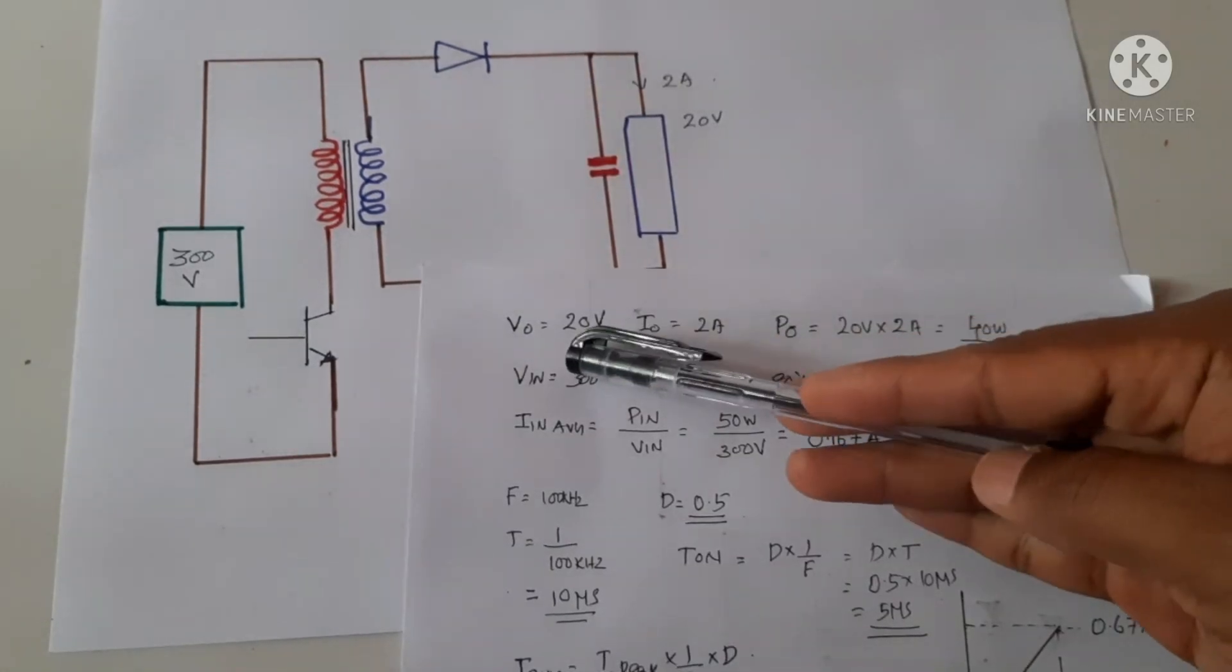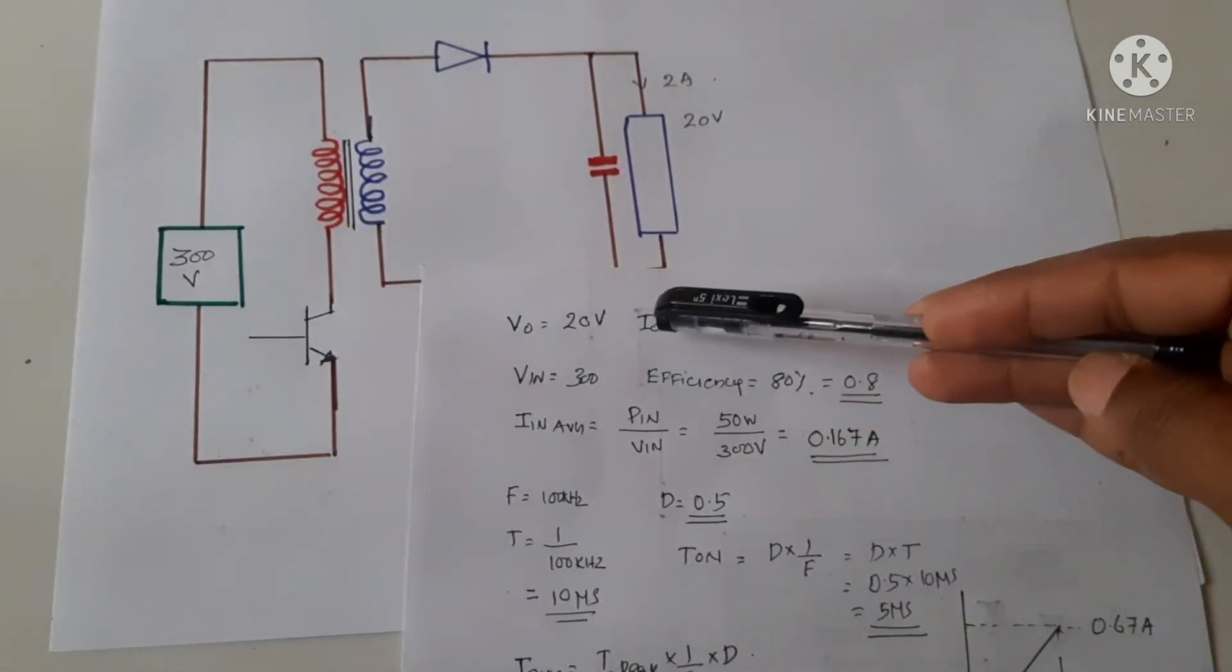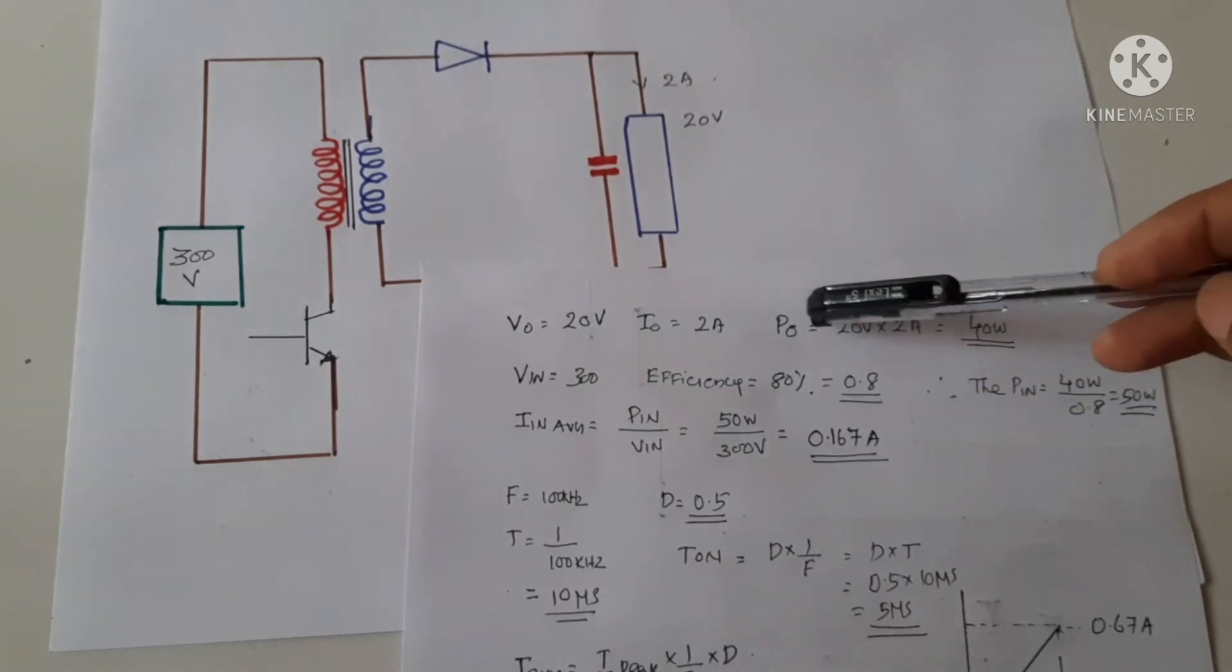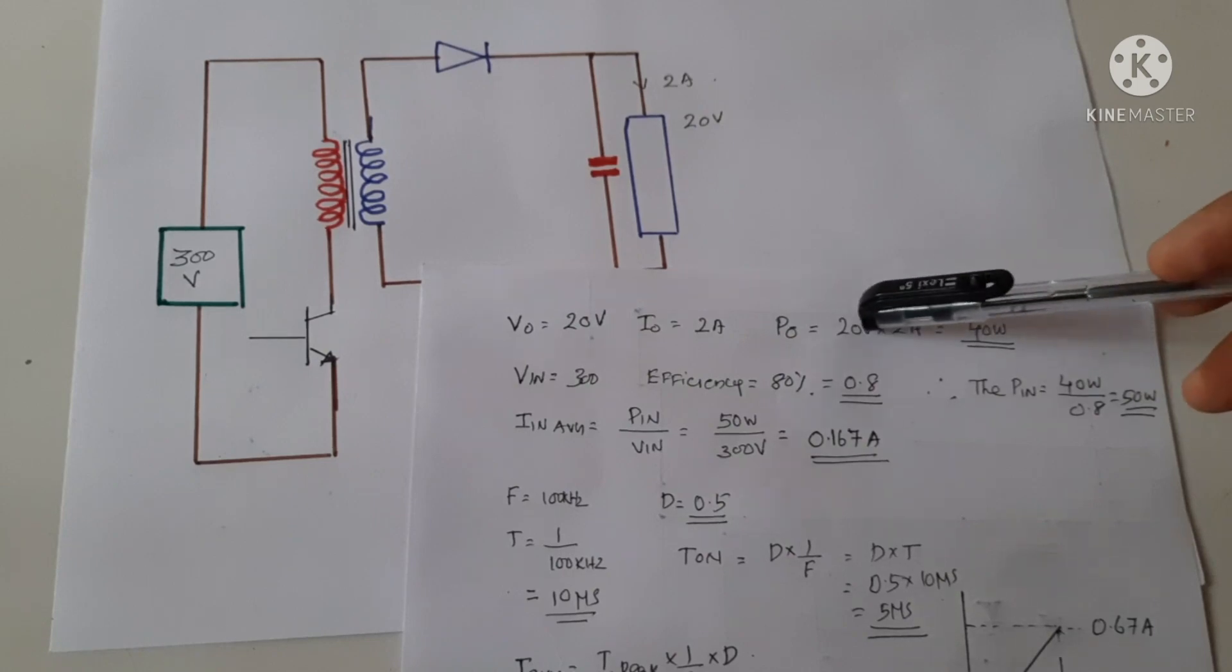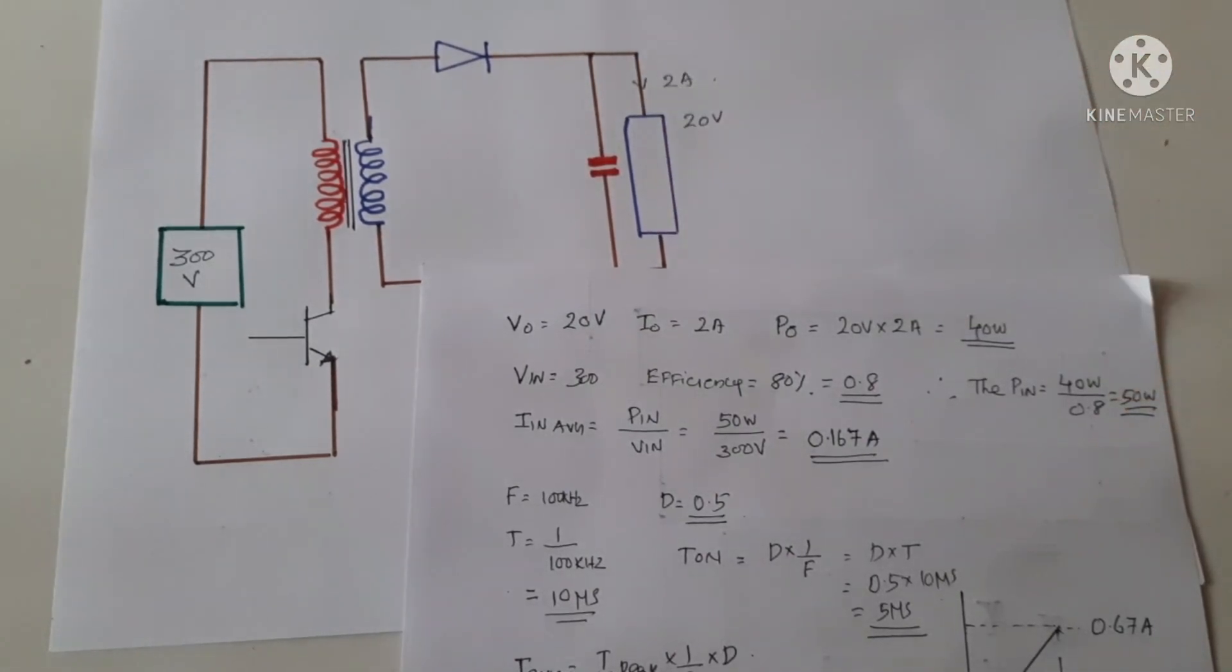So the output voltage is 20 volts and the output current is 2 amperes. The power will be output voltage into output current, that is 20 volts into 2 amperes equals 40 watts of power needed at the output.